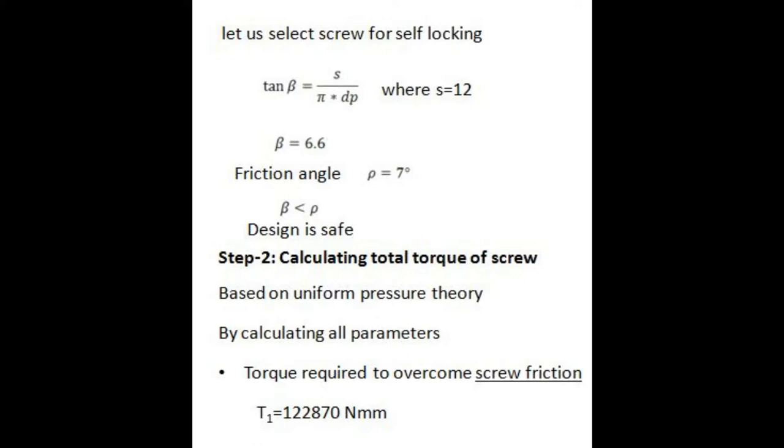Step 2: Calculating total torque of screw based on uniform pressure theory. By calculating all parameters, total torque required to overcome screw friction T1 equals 122.87 times 10^3 Nm.